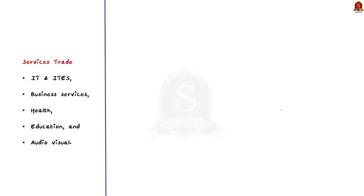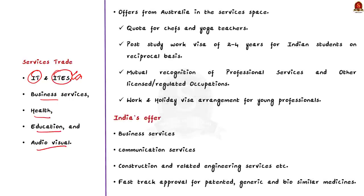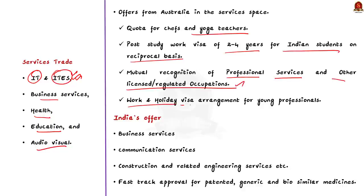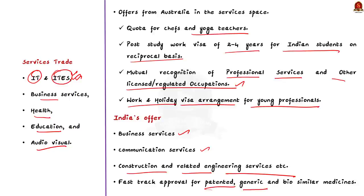With respect to trade in services, the agreement covers key areas of India's interest like information technology, IT-enabled services, business services, health, education and audio visual. Key offers from Australia in the services space include a quota for yoga teachers, post-study work visas of two to four years for Indian students on a reciprocal basis, mutual recognition of professional services and other licensed occupations, and work and holiday visa arrangements. India will offer Australia market access in business services, communication services, construction and related engineering services. Both sides have also agreed to enable fast-track approval for patented, generic and biosimilar medicines.